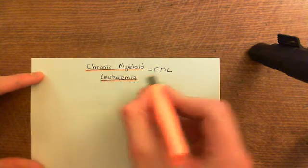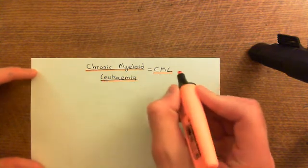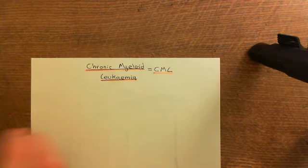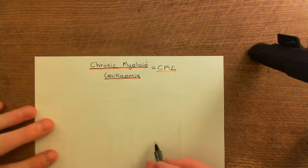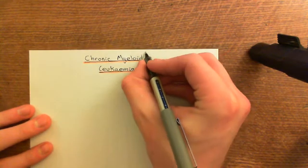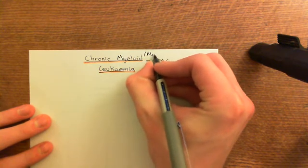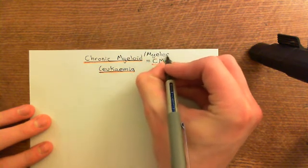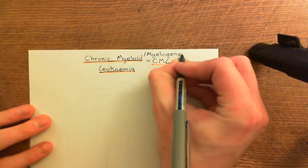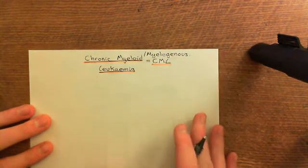By the way, chronic myeloid leukaemia is often abbreviated to CML for short. It's also got a few slight variants on this name, so you might see it referred to as chronic myelogenous leukaemia. That's the same thing as chronic myeloid leukaemia.